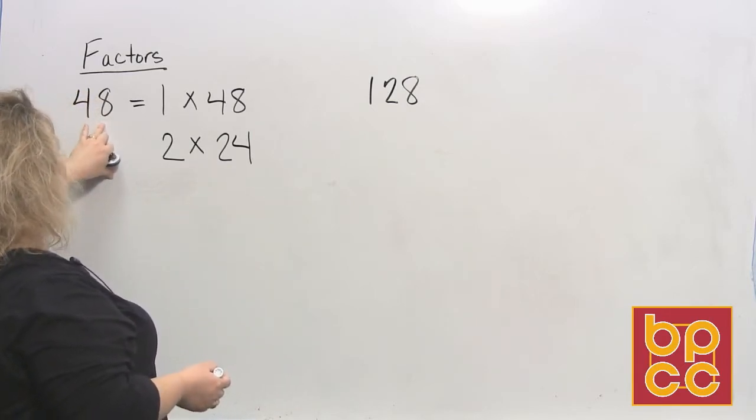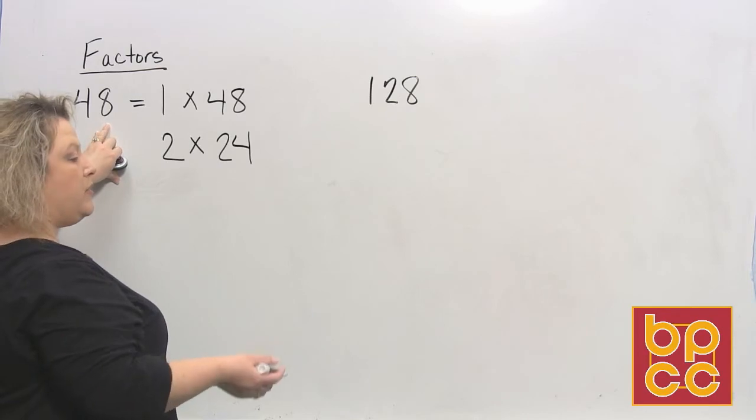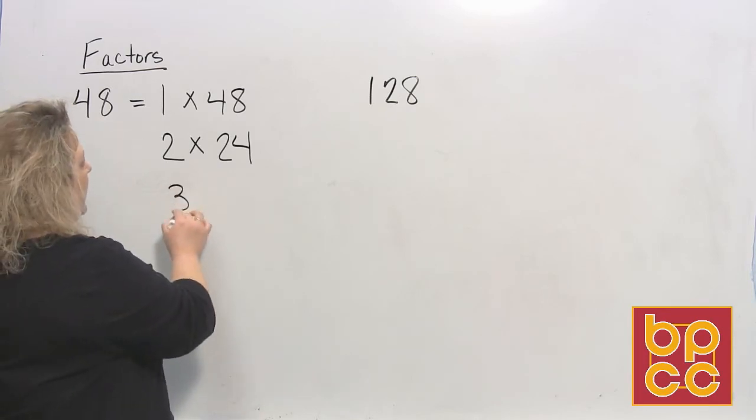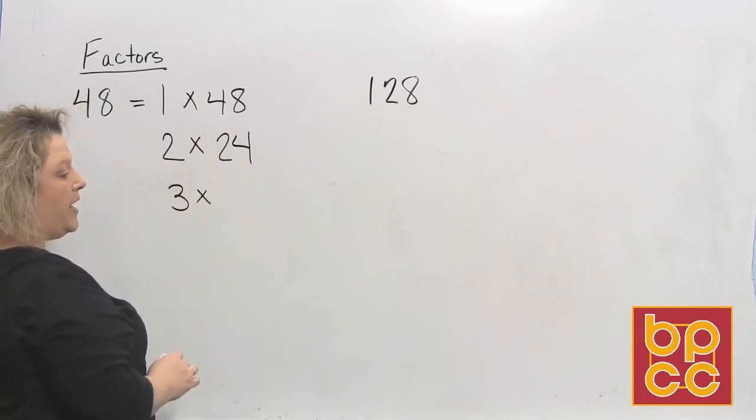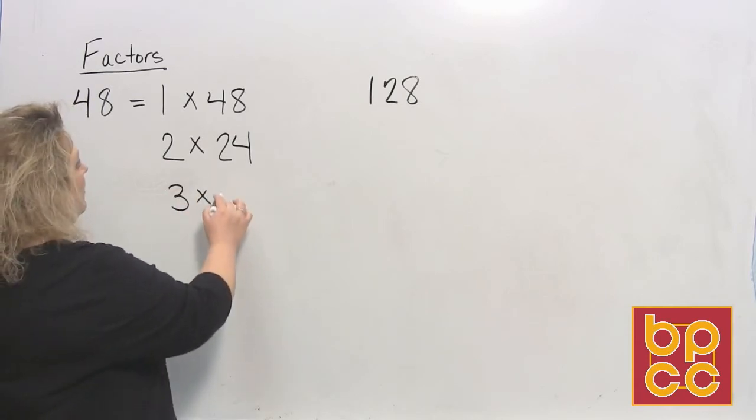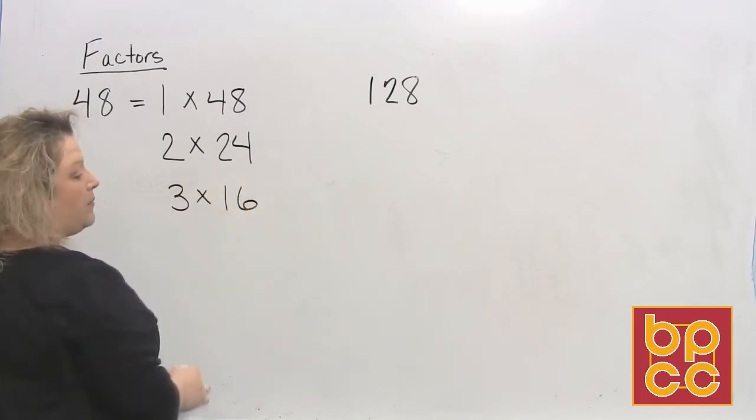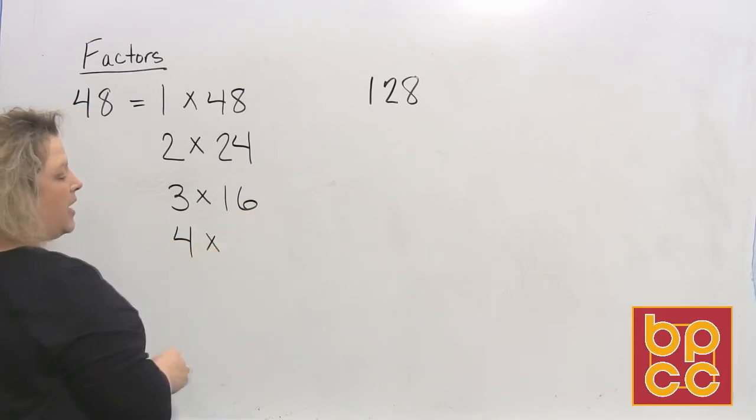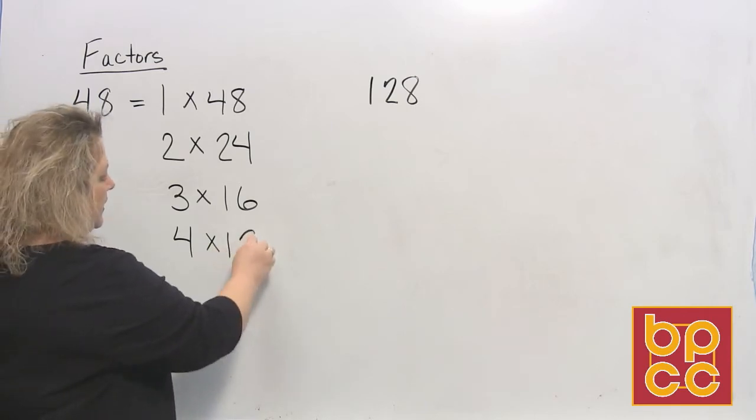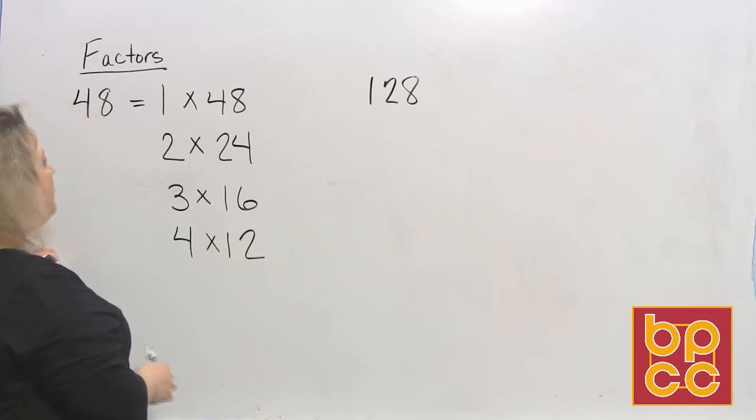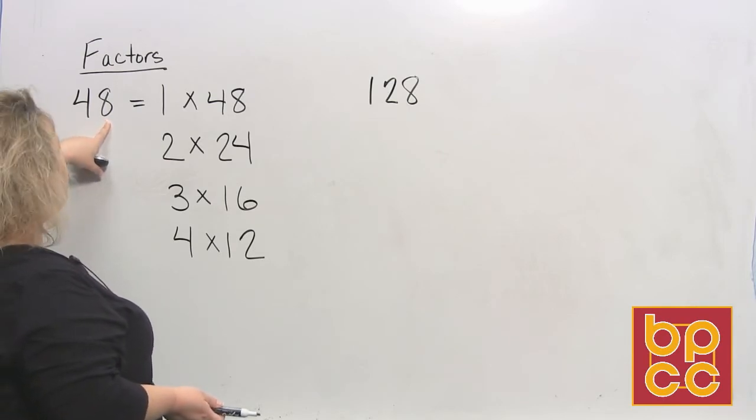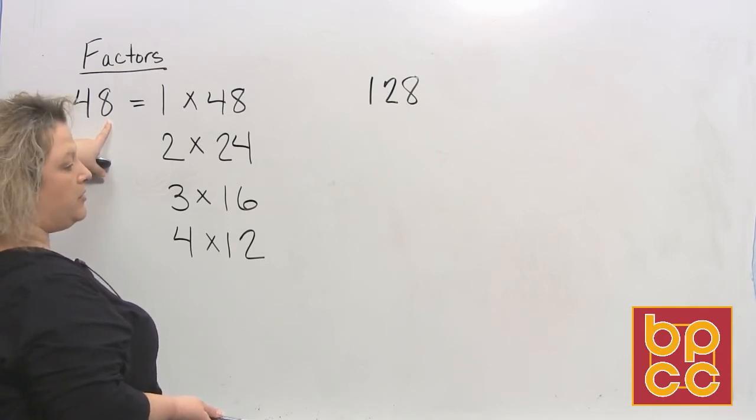Then you use your rules for 3. 4 plus 8 is 12. Well, since 3 divides evenly into the number 12, 3 will divide evenly into the number 48. And it divides in there 16 times. And then 4 times 12 gives me 48. Will 5 divide into it? It doesn't end in 5 or 0, so the answer is no.